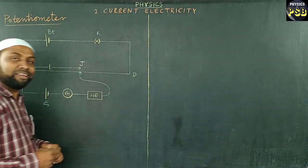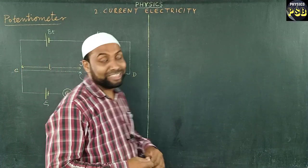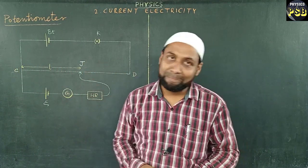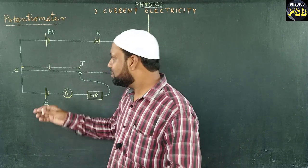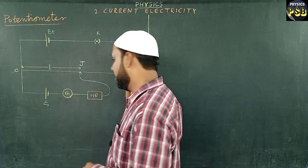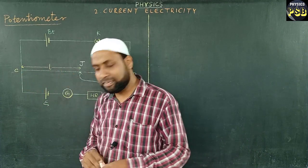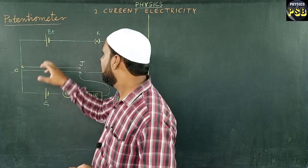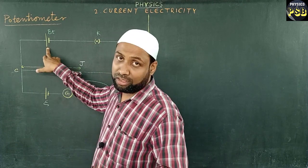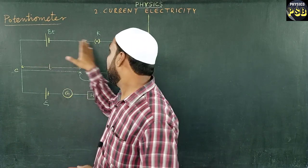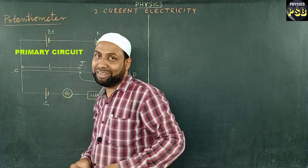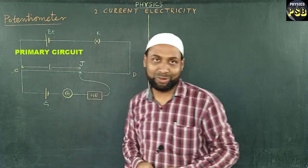Here I have drawn the circuit diagram of the potentiometer. The potentiometer wire CD is connected to a battery via a key — this forms the primary circuit.